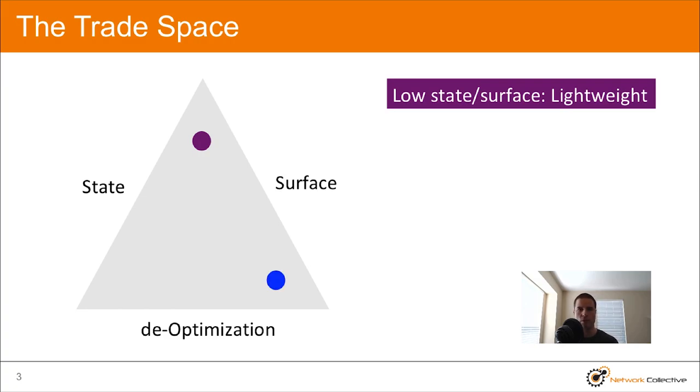Another example is this blue circle on the bottom right. Low surface interactions, meaning it's nice and decoupled, but at the same time it has a high amount of optimization, or should I say a low amount of deoptimization if we want to look at the triangle a little more formally, but it has high state.